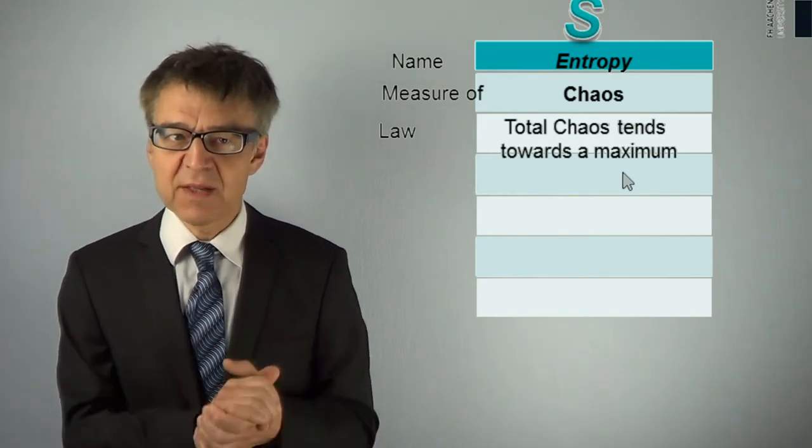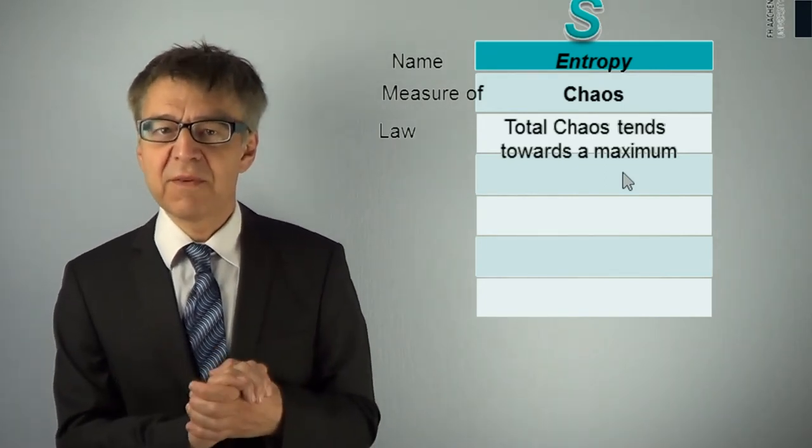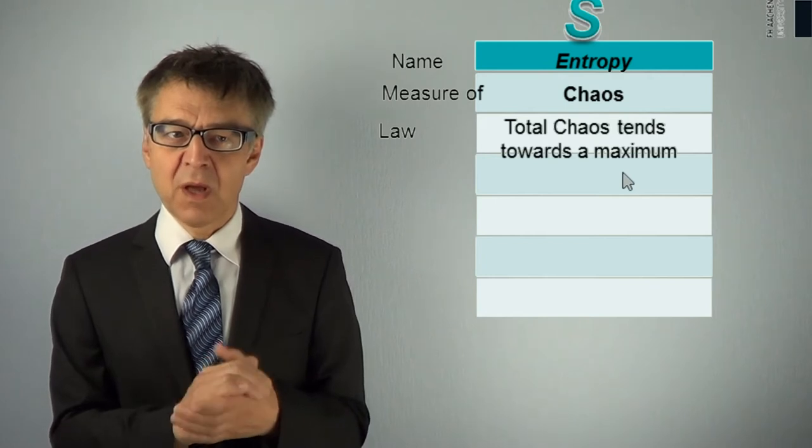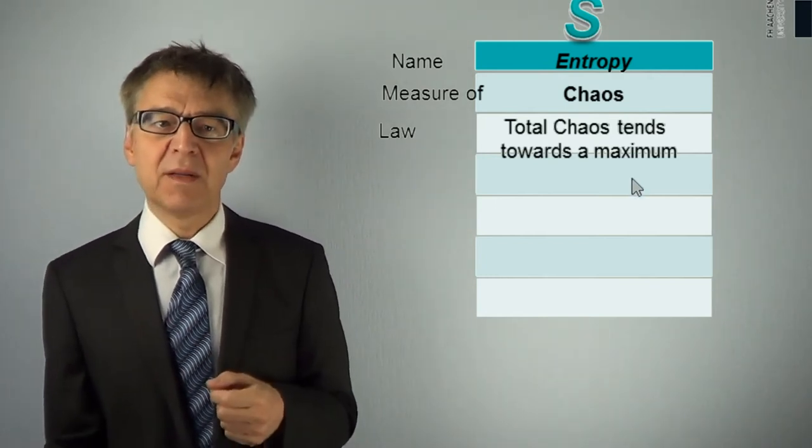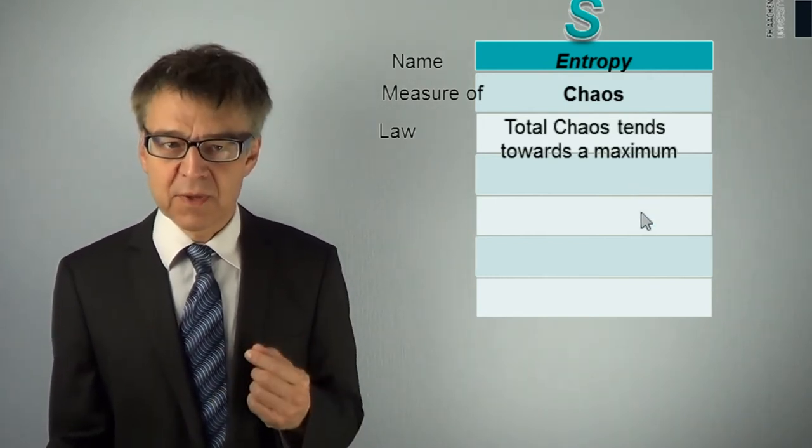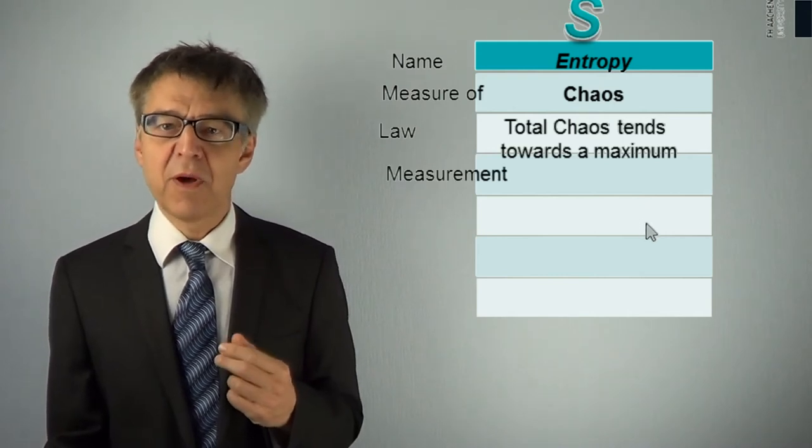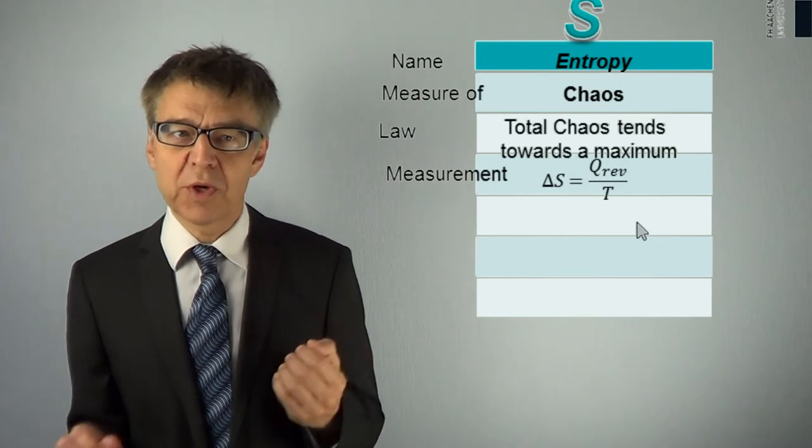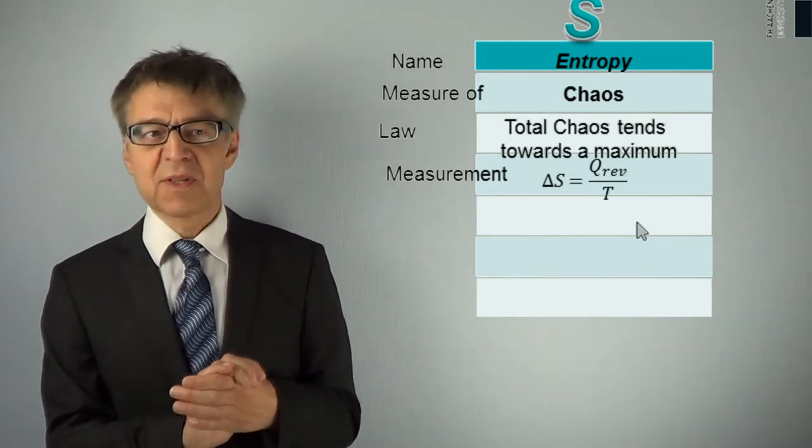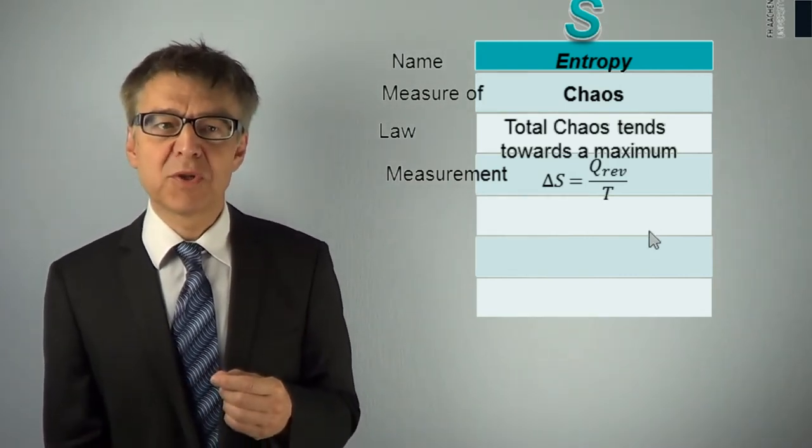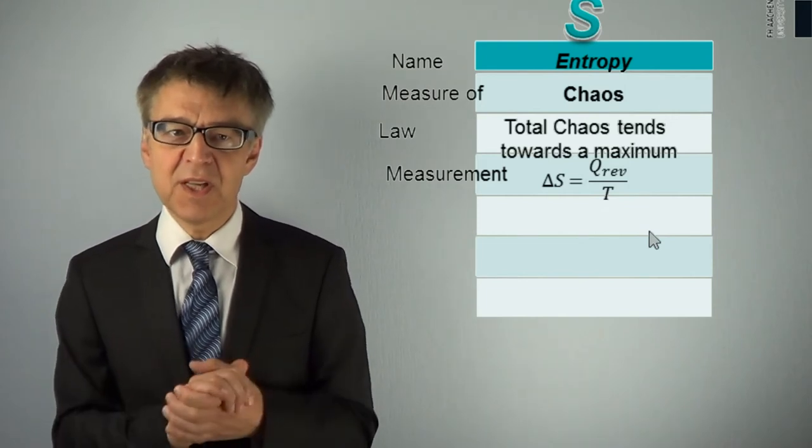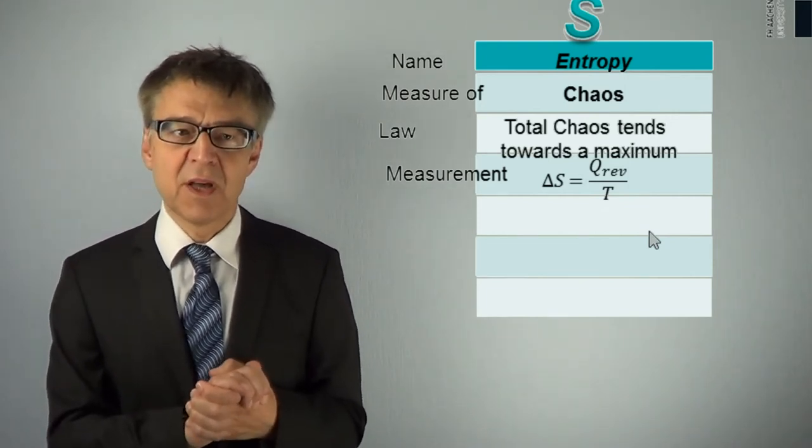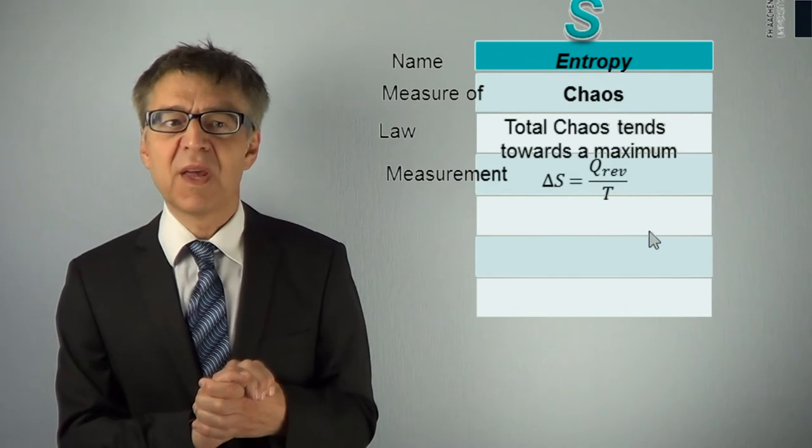The entropy, the chaos in the universe, will never decrease. Measurement of entropy can be done by measuring heat. The quotient of the reversible heat, which occurs in a process or would occur in an equivalent process, divided by temperature, results in a kind of reduced heat, Q over T, which corresponds to the entropy change.